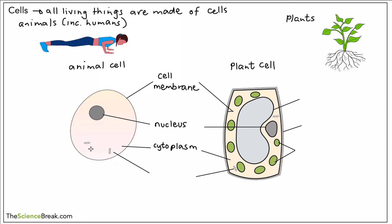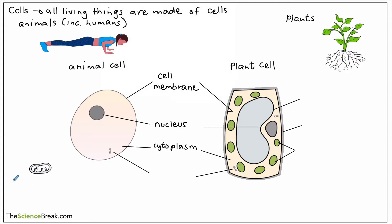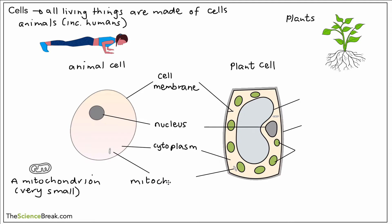Then we have these very tiny parts. Let's take one out and make it bigger so we can see it more clearly — this is called a mitochondrion. These are very very small; you would not be able to see this with your school microscope. We can label these on our main diagram. If we've got more than one we don't say mitochondrians — we say mitochondria. Mitochondria is the plural, meaning when there's more than one of them.